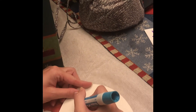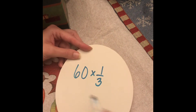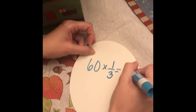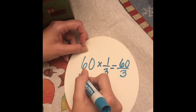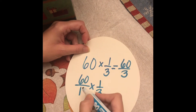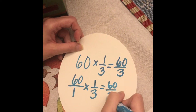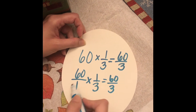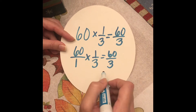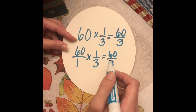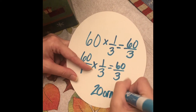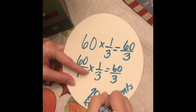I'm going to take my 60 ornaments and multiply by one-third. When multiplying a whole number by a fraction, I can turn 60 into a fraction by putting a 1 under it: 60/1 times 1/3. Multiply the numerators — 60 times 1 gives me 60 — and the denominators — 1 times 3 gives me 3 — so 60 thirds. Since 60 divided by 3 is 20, that means 20 of the ornaments are from students.